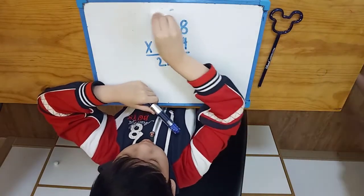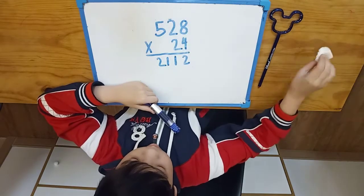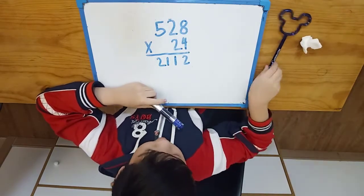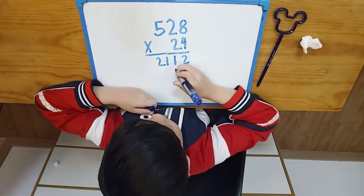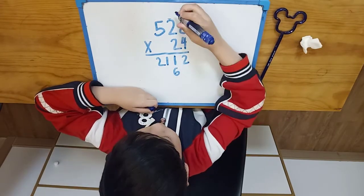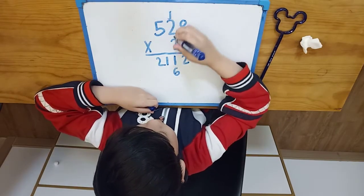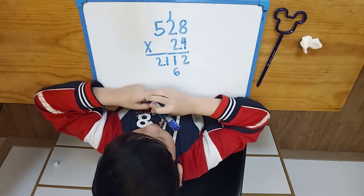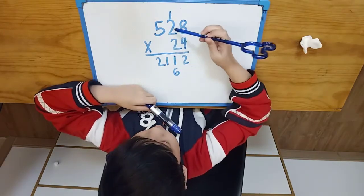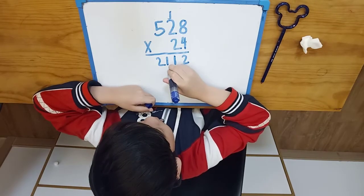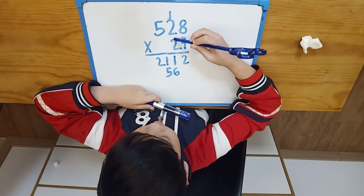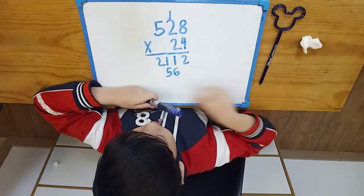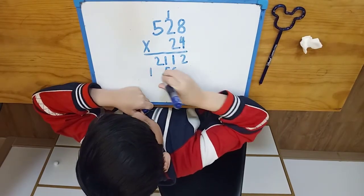Now erase those two top numbers because we don't need them anymore. 2 times 8 is 16. Carry 1. 2 times 2 plus 1 is 5. 2 times 5 is 10.